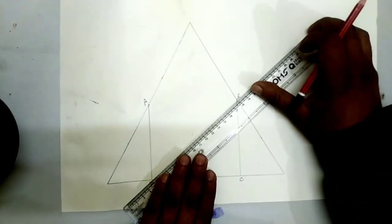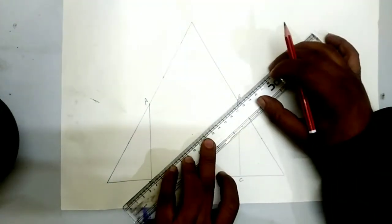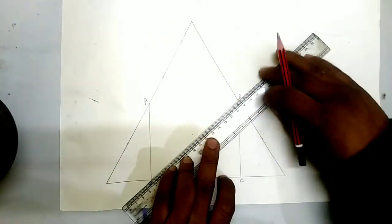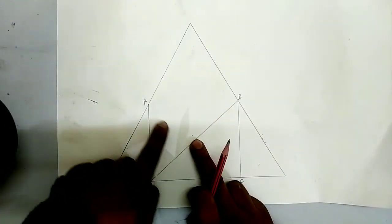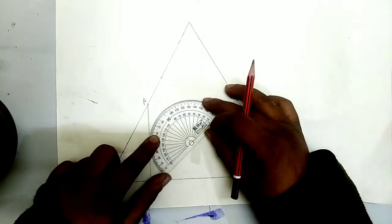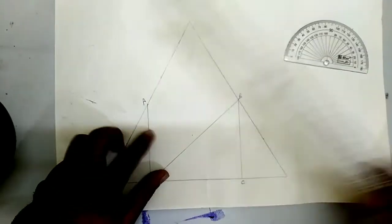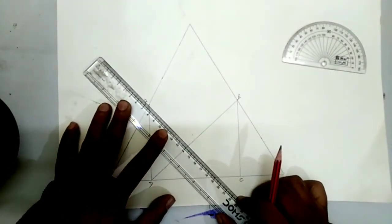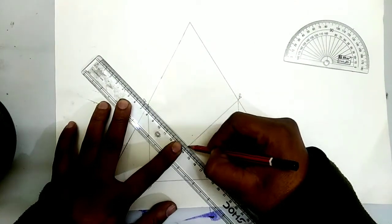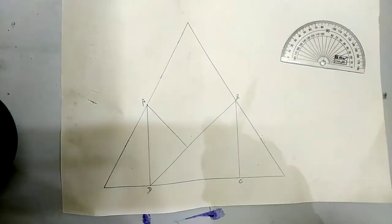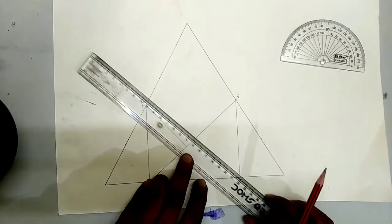Now we will join BD and from here draw a perpendicular to A. Again we will draw a perpendicular to C.